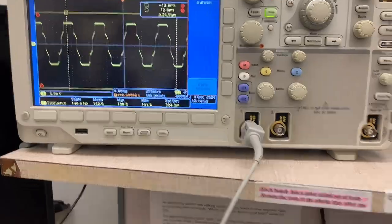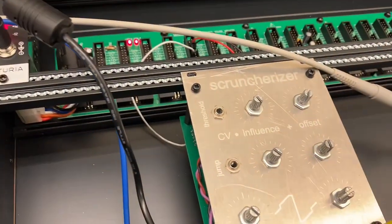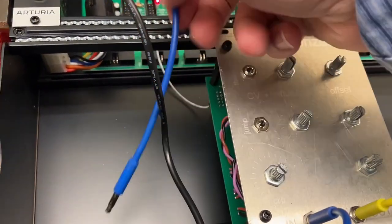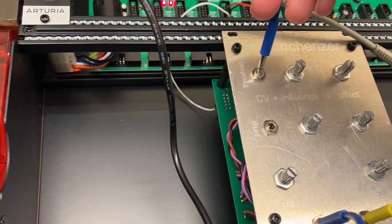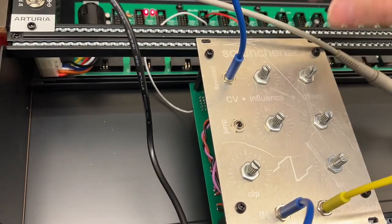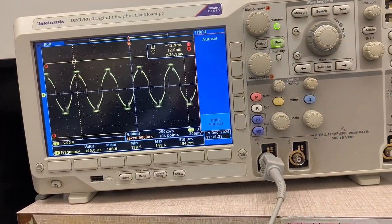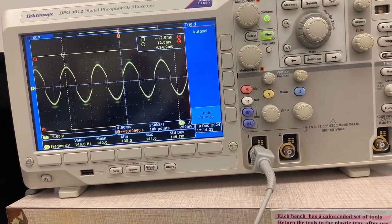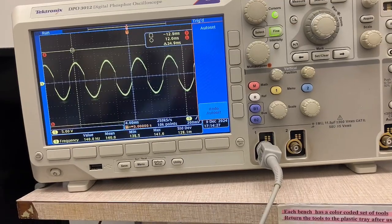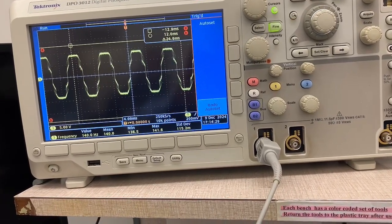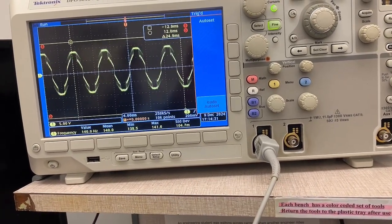We also have voltage control. I'm going to take a control signal, plug it into the control voltage for the threshold, and then turn up the influence knob. Let me turn the offset knob, turn the jump.